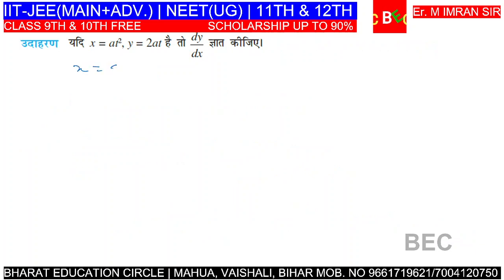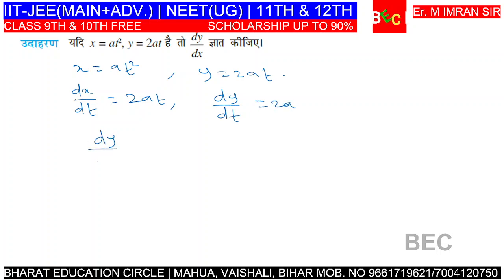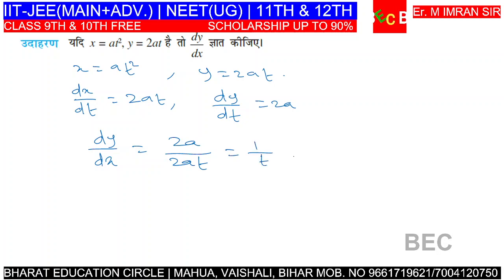Next question: x = at² and y = 2at. Differentiating, the 2s cancel, giving dy/dx = 1/t. This is the correct answer.